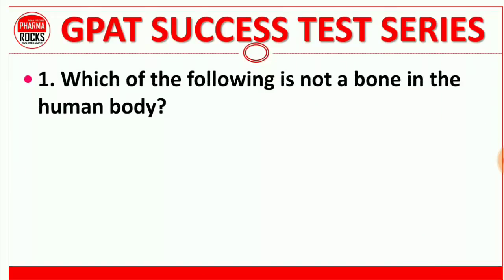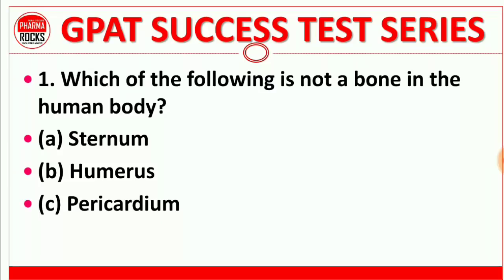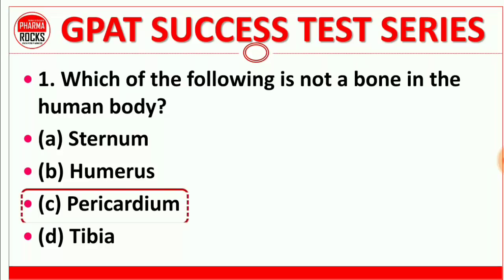Here is question number 1: Which of the following is not a bone in the human body? Option A: Sternum. Option B: Humerus. Option C: Pericardium. Option D: Tibia. The right answer is Pericardium.